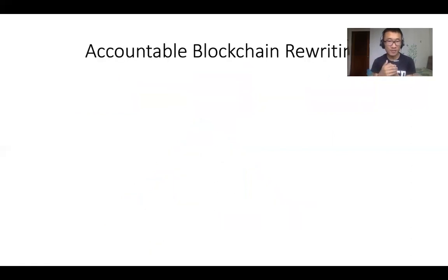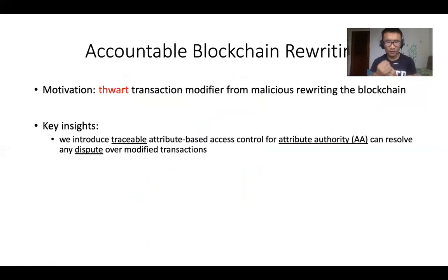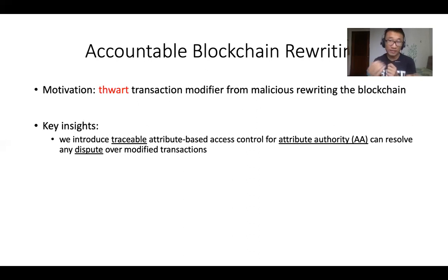Let me talk about the second part of this presentation: accountable blockchain rewriting. The motivation is quite clear — we want to deter transaction modifiers from maliciously rewriting the blockchain. We know that attribute-based access control is a one-to-many solution, which means for each modifiable transaction, there could be multiple modifiers with different privileges satisfying the same policy. This is not desired in blockchain rewriting because modifier A may rewrite the transaction and later deny it, since modifier B or C can do the same thing. Based on this motivation, we introduce traceable attribute-based access control. The benefit is to let the attribute authority resolve disputes over the modified transactions.